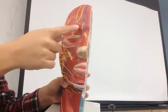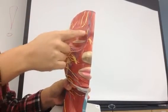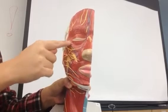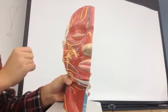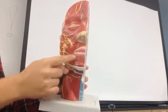The orbicularis oculi is the muscle right around the eye. The orbicularis oris is the one around the mouth.